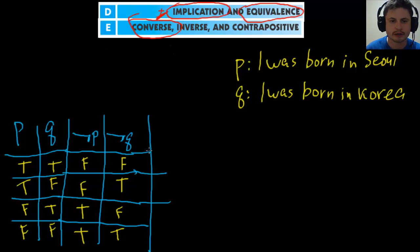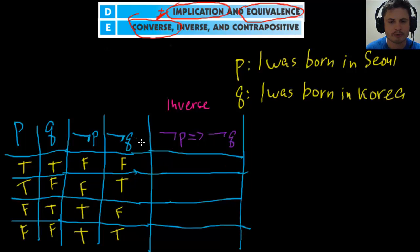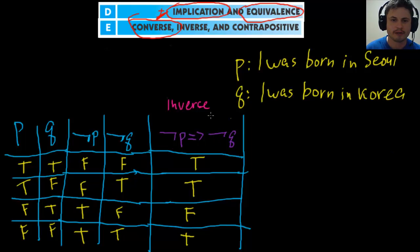The inverse says: if not P then not Q. Row one: if not born in Seoul, then not born in Korea — true. Row two: if not born in Seoul, I was born in Korea — possible, so true. Row three: if I was born in Seoul, I was not born in Korea — false, because Seoul is in Korea. Row four: born in Seoul and born in Korea — true. Inverse truth table: true, true, false, true.